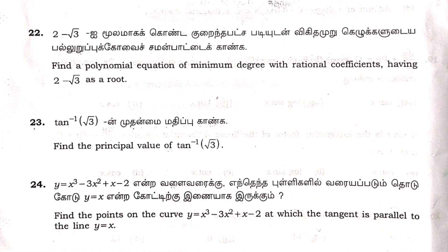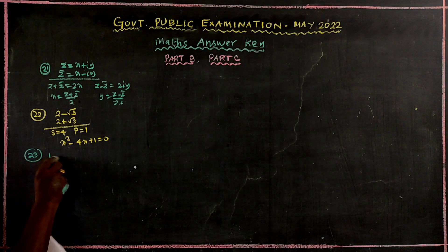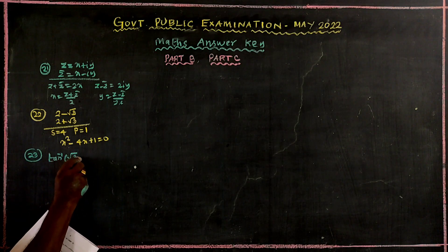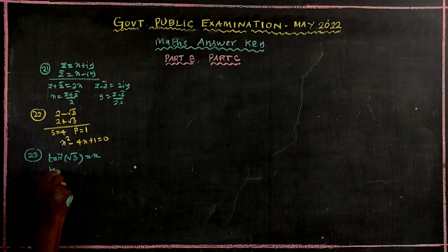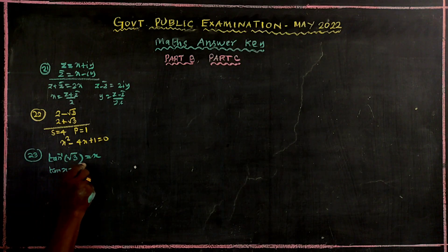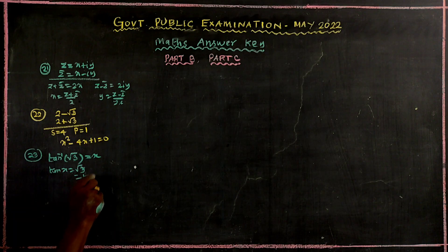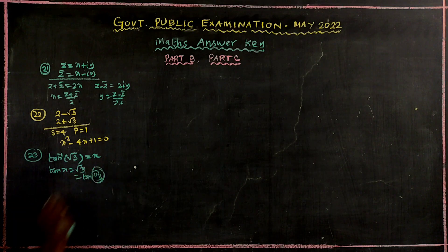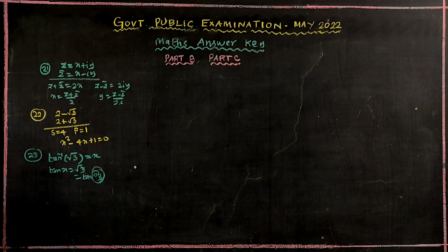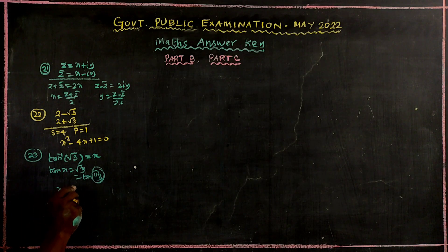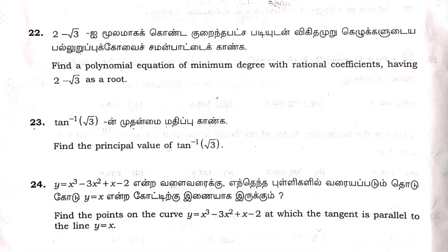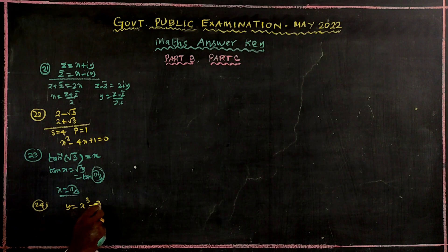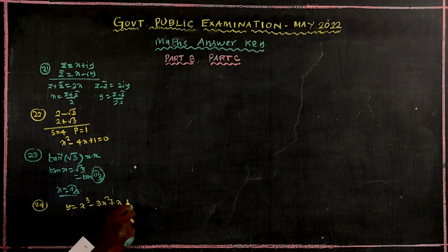Problem number 23 is one. Problem number 24: y is equal to x cubed minus 3x squared plus x plus 2.